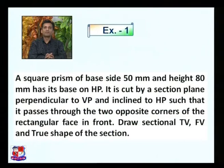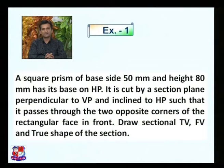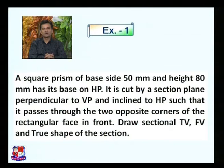A square prism is cut by a section plane perpendicular to VP and inclined to HP such that it passes through the two opposite corners of the rectangular face. Draw the sectional top view, front view, and true shape of the section.